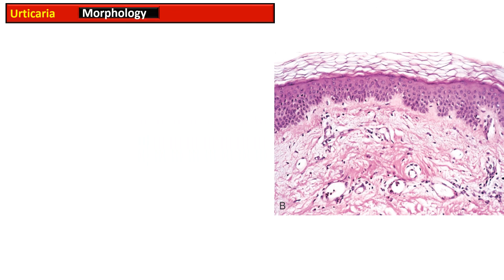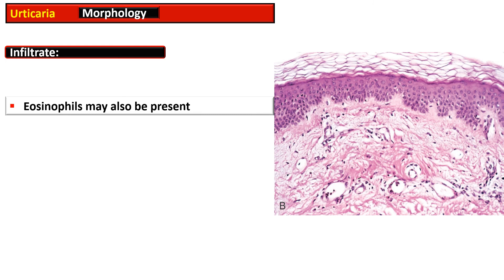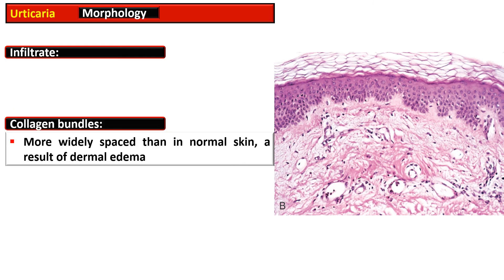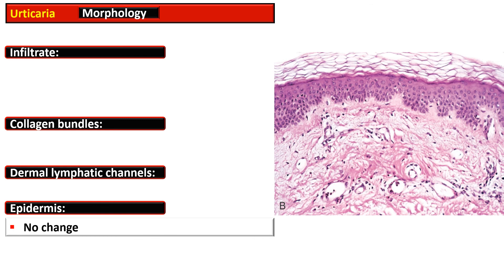The histological features of urticaria are subtle. The epidermis remains unchanged, while there is a sparse superficial perivascular infiltrate consisting of mononuclear cells rather than neutrophils. Eosinophils may also be present. Collagen bundles are widely spaced due to edema within the dermis, and dermal lymphatic channels are dilated due to increased absorption of dermal edematous fluid.